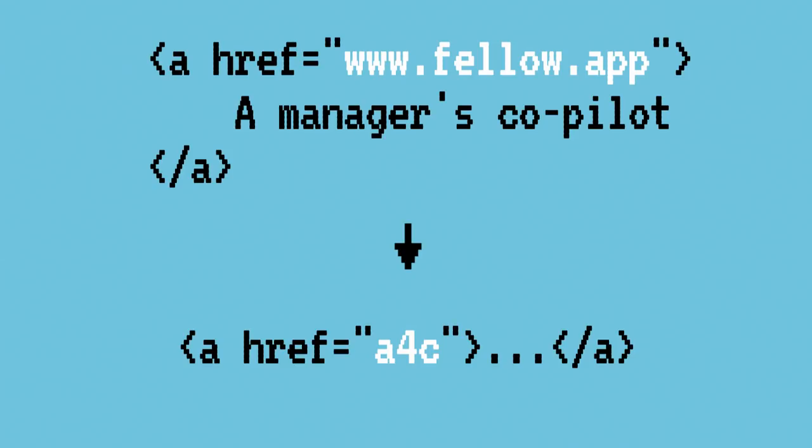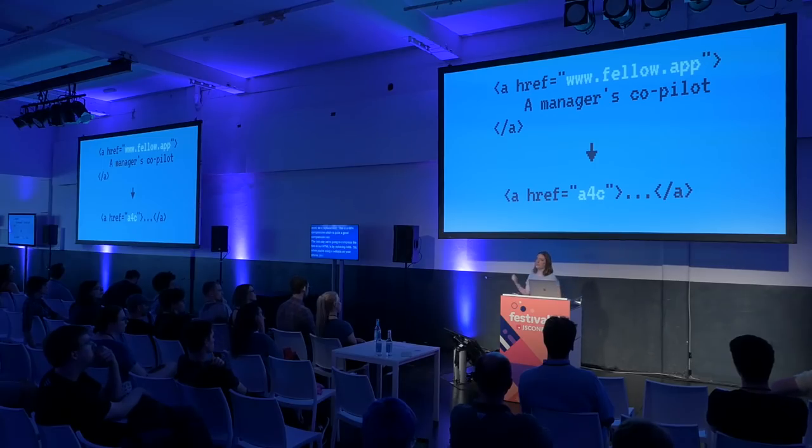The last way we compress the text in our HTML is by replacing links. When you're using a website on your phone, you don't care what a link actually is — you just care that it takes you where it's supposed to take you. But links can be really long, up to 2,000 characters. So instead of sending over these links that no one is actually going to be reading, we're going to replace them with really short random strings. When a user clicks on a link in the app, that short link is sent back to the server, the server knows what long link it maps to, and it fetches the correct data.